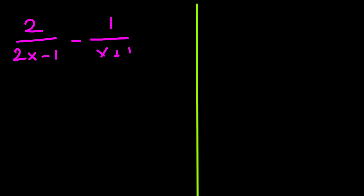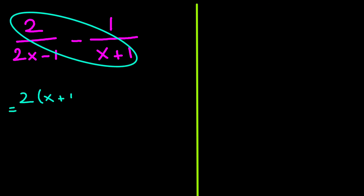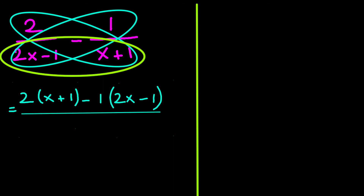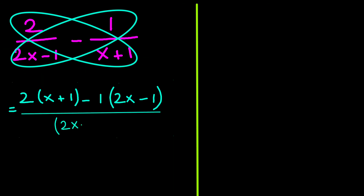Pause the video and try this example: 2 divided by (2x minus 1) minus 1 divided by (x plus 1). Let's multiply 2 with (x plus 1), then multiply negative 1 with (2x minus 1), the whole divided by the product of the denominators, which is (2x minus 1) times (x plus 1).